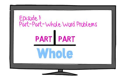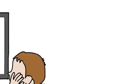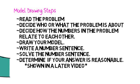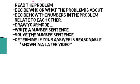The steps we're going to use today are: 1. Read the problem. 2. Decide who or what the problem is about. 3. Decide how the numbers in the problem relate to each other. 4. Draw your model. 5. Write a number sentence. 6. Solve the number sentence. 7. Determine if your answer is reasonable by using estimation strategies.